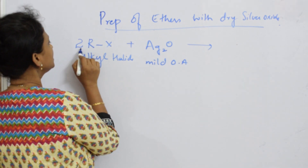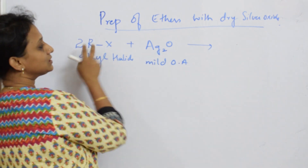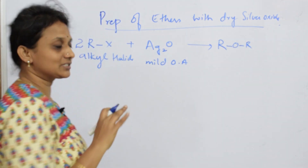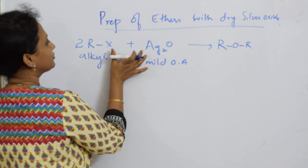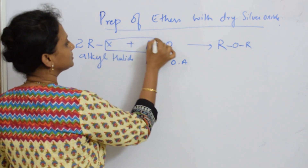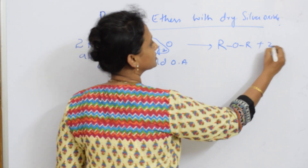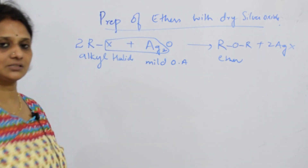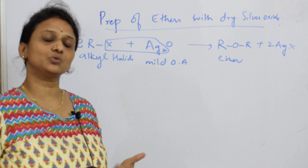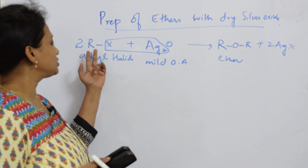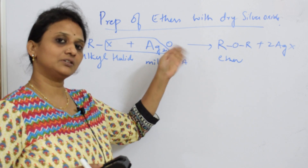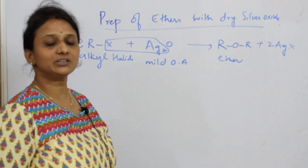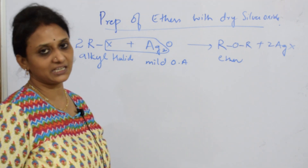The reaction: R and R — two alkyl groups — and oxygen is added, giving R–O–R (the ether), with the leftover being AgX. So it's basically the addition of oxygen to your alkyl halide to form the particular ether. If Ag₂O is given to you, it's just addition of oxygen to your alkyl halide to form the ether. We are done with the preparations — I'll meet you again in the chemical reactions of ethers in my next video.